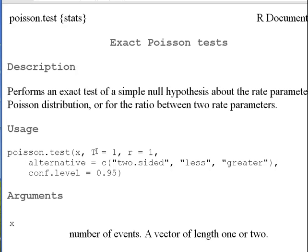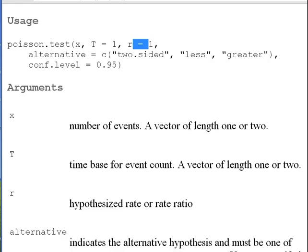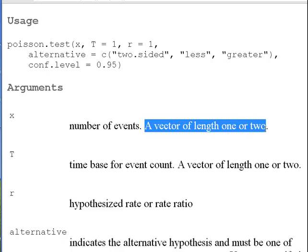The function signature is: poisson.test(x, t = 1, r = 1). The argument x is the number of events — a vector of length 1 or 2. t is the time base, also a vector of length 1 or 2. And r is the hypothesized rate ratio. So 1 argument gives a one sample test, and 2 arguments give a two sample test.